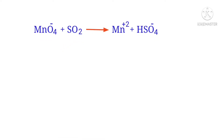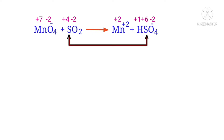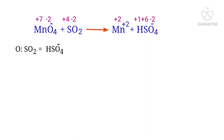Figure the oxidation number of each element by the rules of assigning oxidation numbers. In this equation, sulfur has a charge of plus 4 and it is changing into plus 6, so sulfur is being oxidized. The manganese has a charge of plus 7 and it is changing into plus 2, so manganese is being reduced.